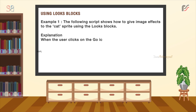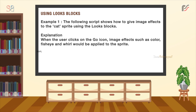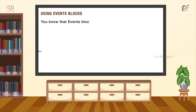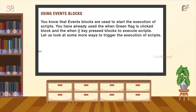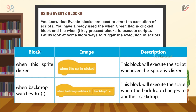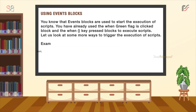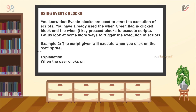Here is an example. The following script shows how to give image effects to the cat sprite using Looks blocks. When the user clicks on the go icon, image effects such as color, fish eye and whirl would be applied to the sprite. Events blocks are used to start the execution of sprites. You have already used the 'when green flag is clicked' block and the 'when key pressed' block to execute scripts. The 'when this sprite is clicked' block will execute the script whenever the sprite is clicked. The 'when the backdrop switches to' block will execute the script when the backdrop changes to another backdrop. An example: the script will execute when you click on the cat sprite, changing the color of the cat by the value of 25.